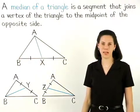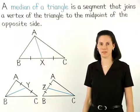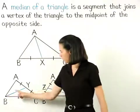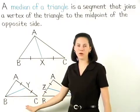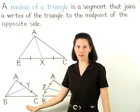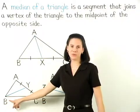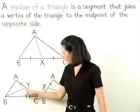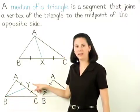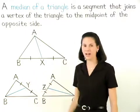Note that triangle ABC has three medians. Segment BY in the next diagram is also a median of triangle ABC because one of its endpoints, B, is a vertex of the triangle, and its other endpoint, Y, is the midpoint of the opposite side.